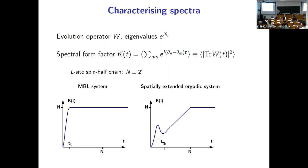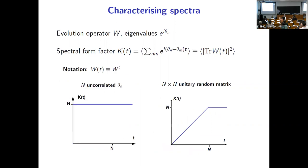For the uniformly random matrix, why does it have a linear-in-T behavior? That's because of level repulsion, which says that the short-wavelength components in the spectral density fluctuate much less than if there weren't any correlations between the levels.